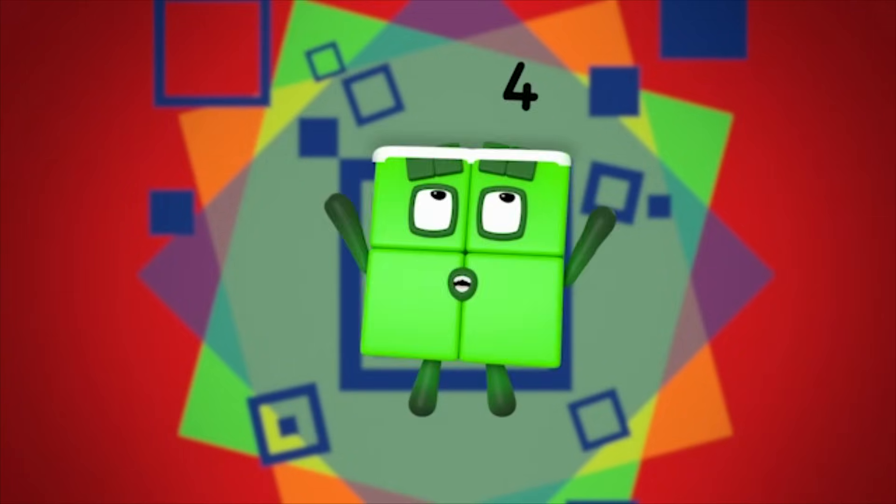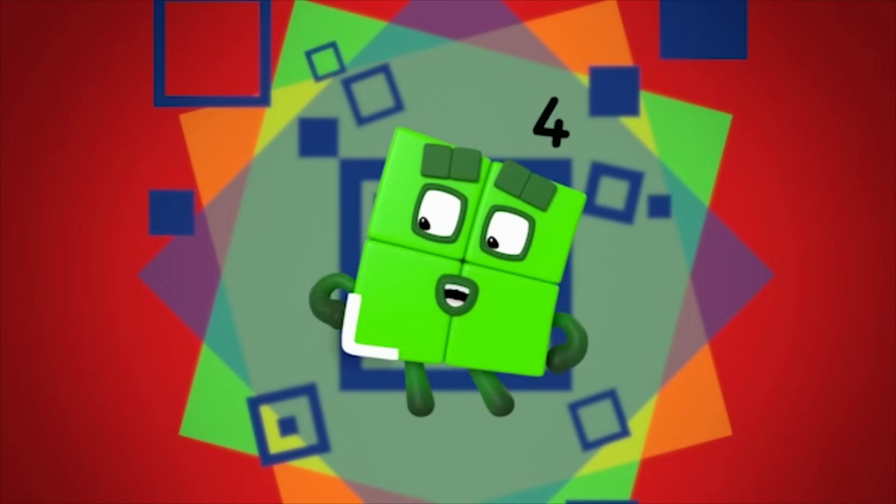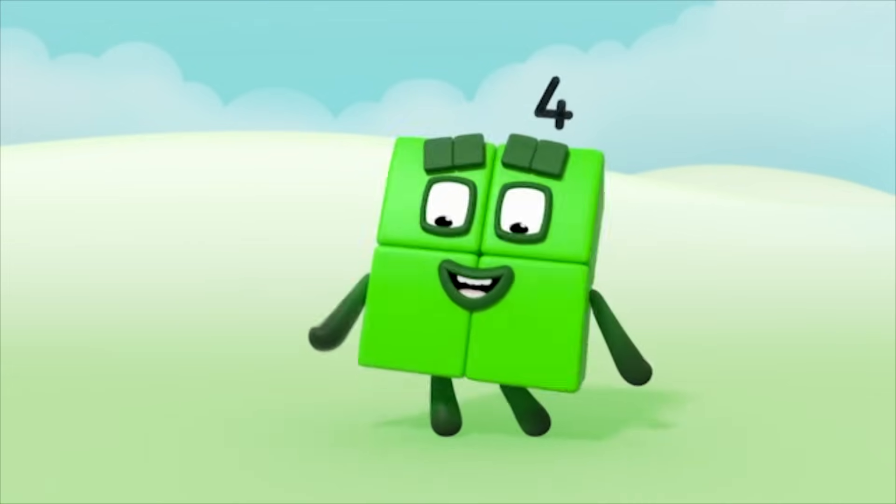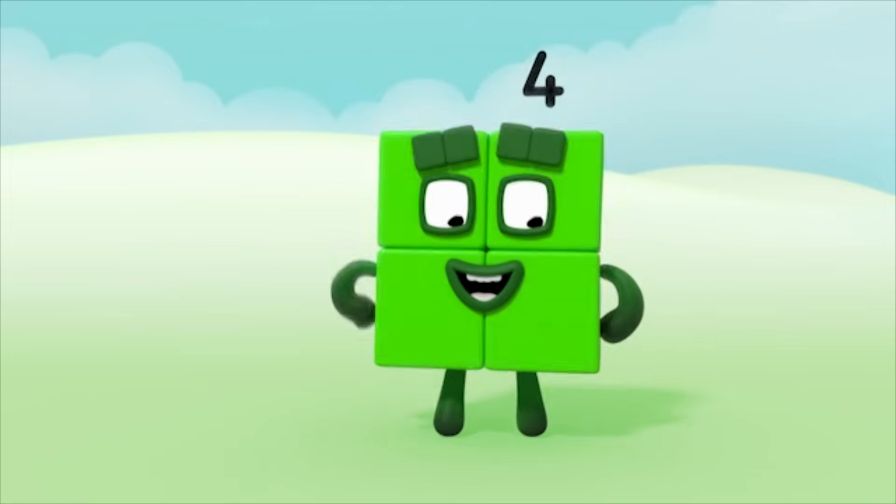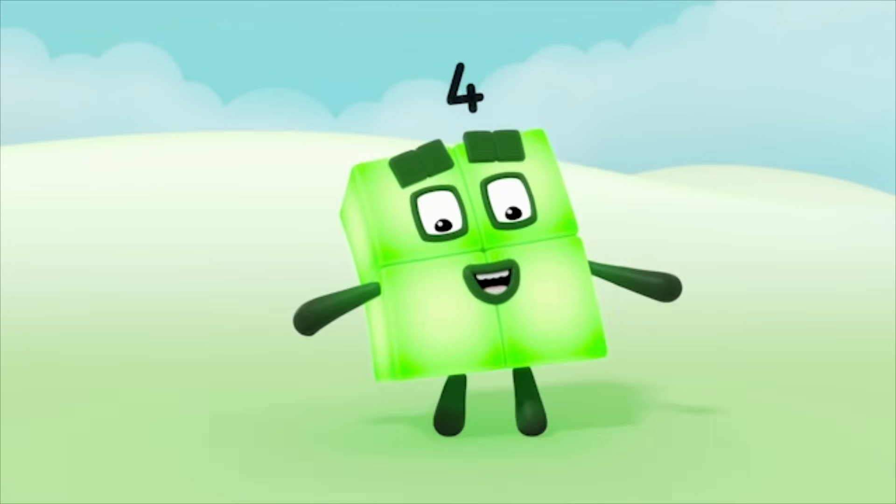One, two, three, four. Four sides. One, two, three, four. Four corners. Square is the shape for me. It has four corners and four sides, you see. When four blocks make one big block, I'm solid as a rock.